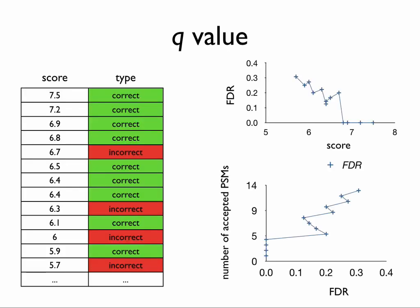Here is a demonstration of why the q-value is important. I'll show what happens if you descend through a list using a straight false discovery rate. We have a score indicative of the correctness of the statistic, and we've sorted statistics according to their score in descending order, with higher scores being more likely to be correct.